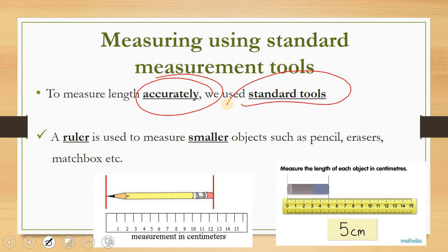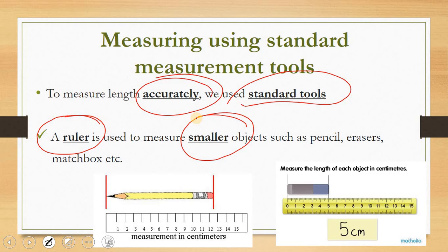For example, we have a ruler and also a measuring tape. Ruler we use to measure smaller objects. Ruler ataupun pembaris, kita guna untuk mendapatkan bacaan objek yang kecil. A ruler is used to measure smaller objects — kamu kena hafal this, it's always masuk dalam objektif. They will ask: ruler untuk apa? Smaller or bigger? Your answer should be smaller.